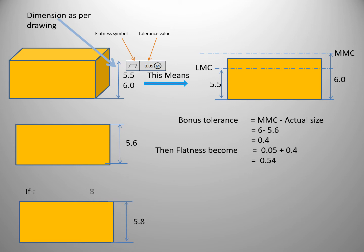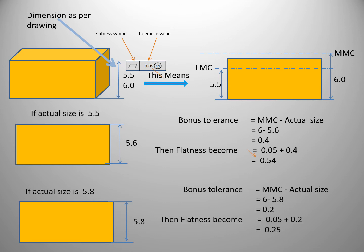Consider another example where the component is measuring 5.8. The bonus tolerance is MMC minus actual size, that is 6 minus 5.8, giving a bonus tolerance of 0.2. Now we add this to the given GD&T tolerance of 0.5, so the modified GD&T tolerance becomes 0.7. This is how we modify our given GD&T tolerance by using bonus tolerance practically.